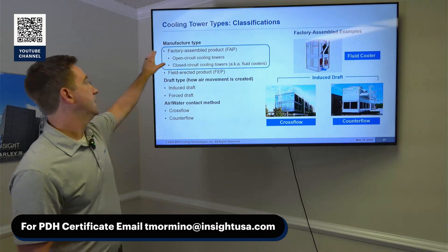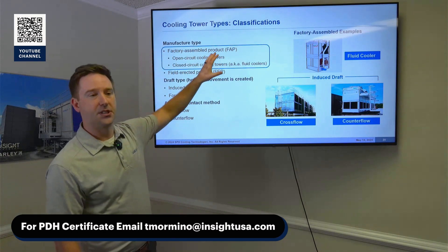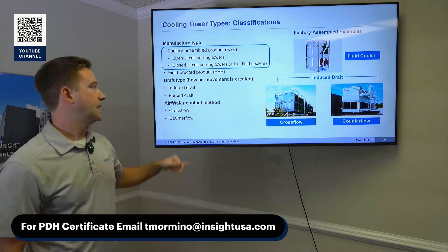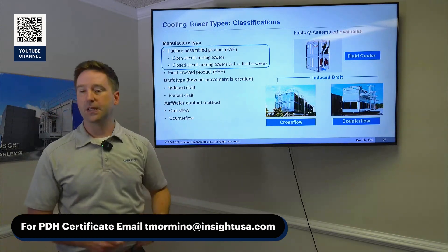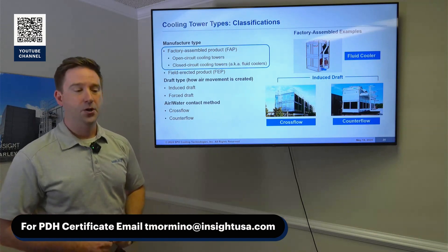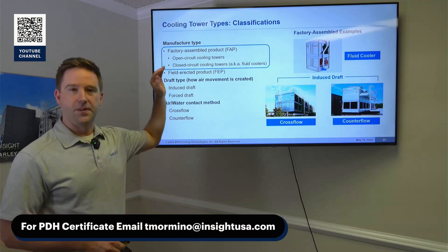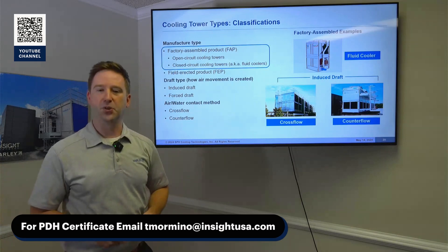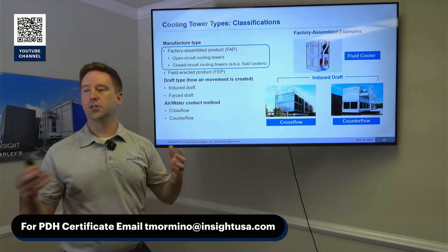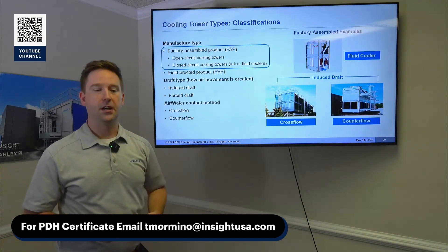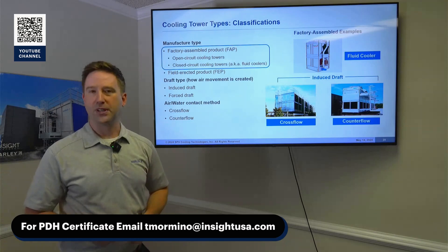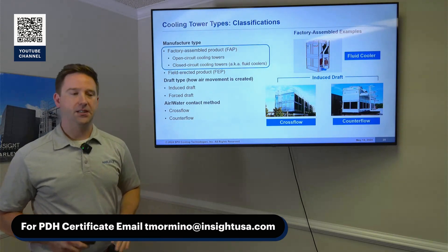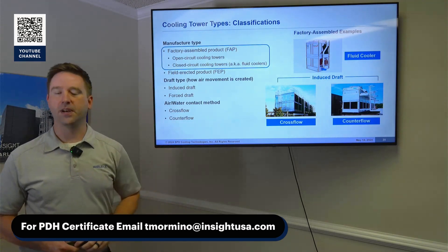The first category is a manufacturing type. There are factory-assembled products — we call them FAP towers — and then there are field-directed products. We're going to stick on the factory-assembled side for the most part, because field-directed towers are seen more on large manufacturing processes or power plants. On an HVAC side, you'd look at the factory-assembled type.